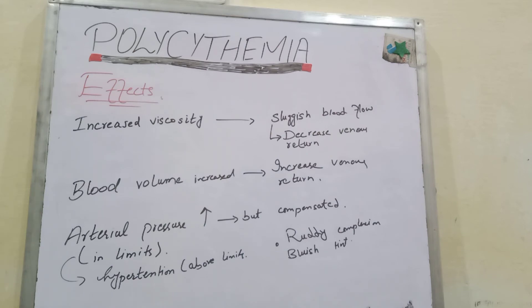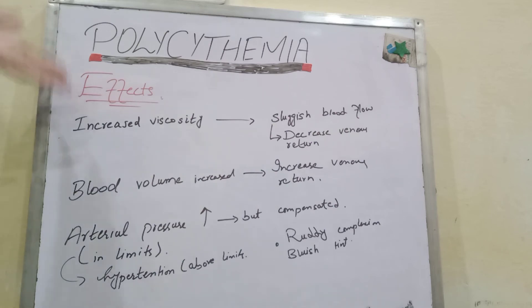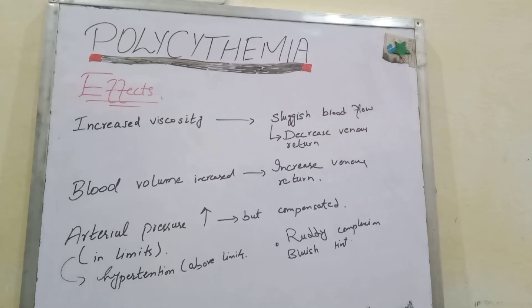A person living at high altitude or living with polycythemia vera shows a ruddy complexion — ruddy meaning red, a reddish skin or reddish tint. Why is there red skin? Because there is a large number of RBCs, and when there is a large number of RBCs, this gives a red color to the skin.